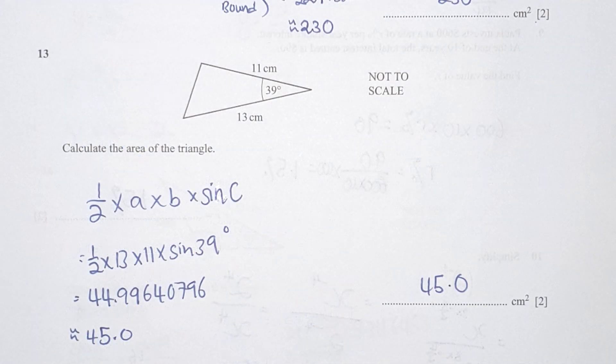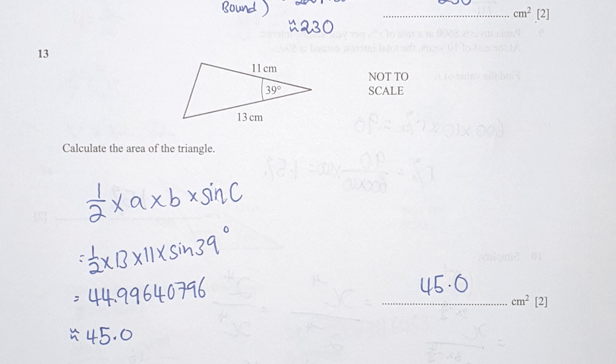As for question 13, half a, b, sine c will be the formula that we use to calculate irregular triangle area. So half times 11 times 30 times sine 39. After you correct your answer in the three significant figures, it should be 45.0.